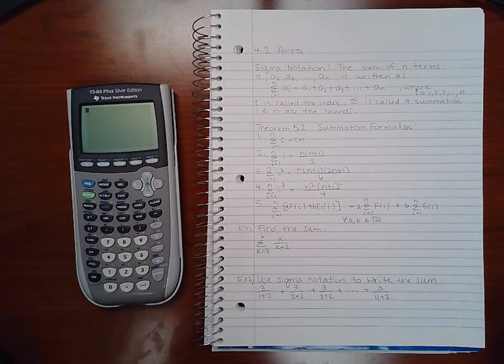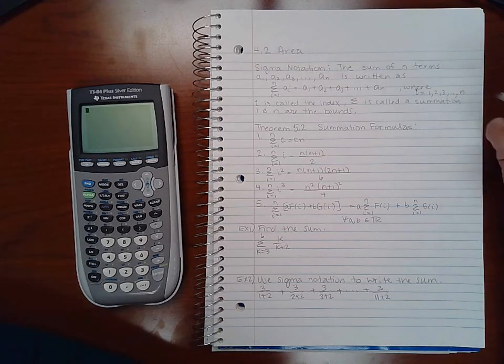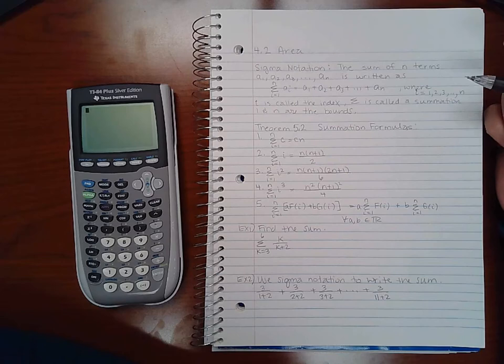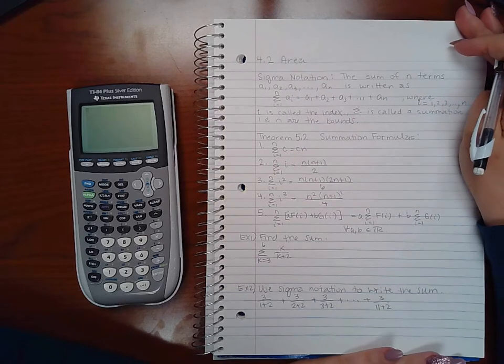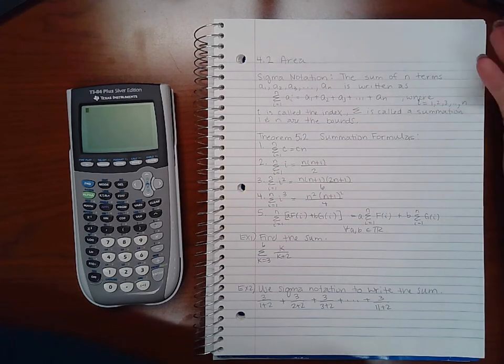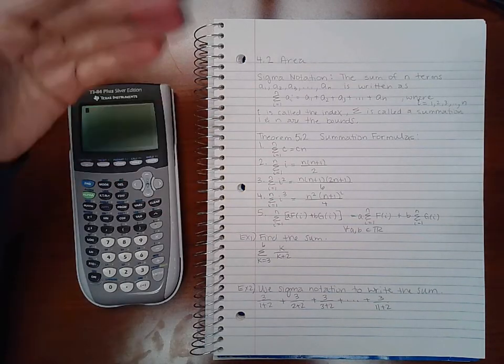Okay, getting into the next section now. In the first section all we talked about was indefinite integrals. There is such a thing as a definite integral; however, the definition of a definite integral has to do with area. So before we can talk about that definite integral, we must get into the notation for finding areas. So in this section you're going to be finding the areas underneath curves, but before that we have to get into what's called summations.